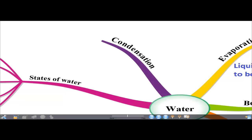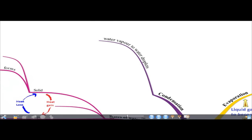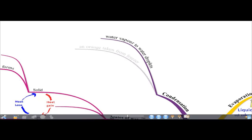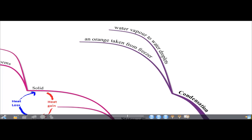What is condensation? Condensation is a process where the water vapor in the air cools to become water droplets — on surfaces or in the air.